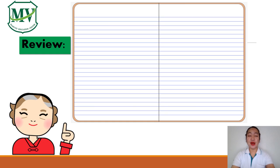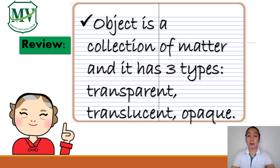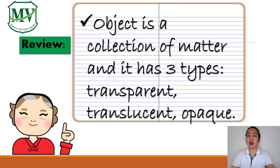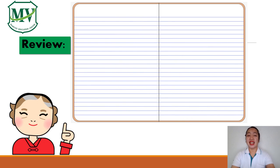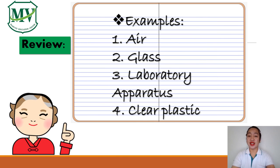It's review time! What enables us to see things around us? Yes, it's light! Remember, objects are those that can be seen or touched. Objects differ in the amount of light that is allowed to pass through them. There are three types of objects: transparent, translucent, and opaque. Transparent objects are the ones that allow all light to pass through them — a clear image is seen. Examples of transparent objects are air, glass, laboratory apparatus, and clear plastic.